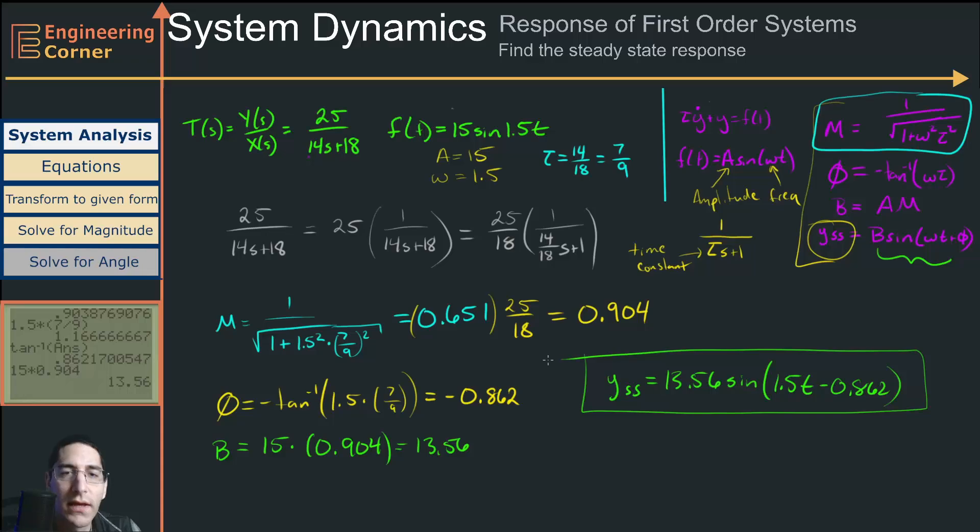So hopefully, this has helped you figure out how you can find the steady state response given a first order function when there's no S term in the numerator.